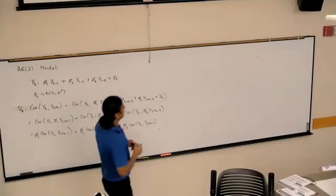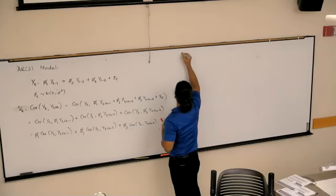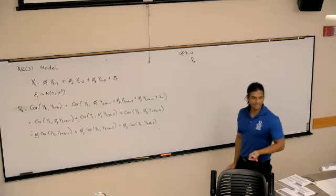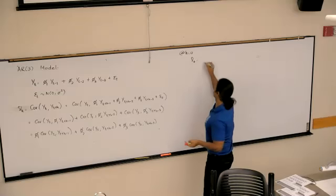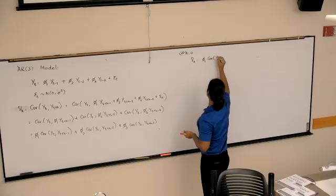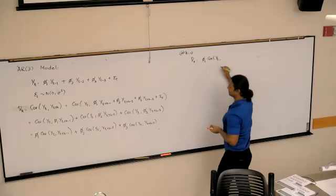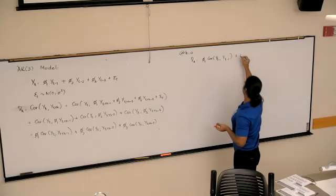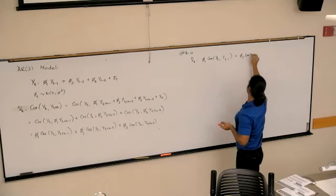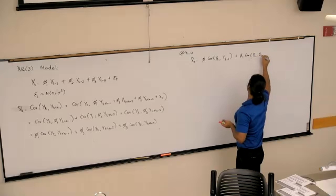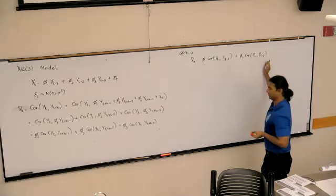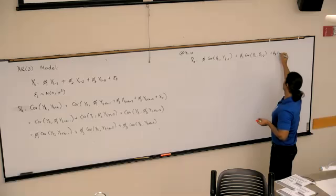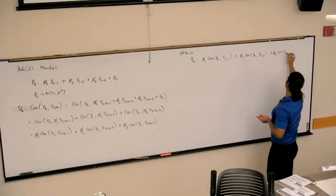So that is our expression for gamma H. Now we can plug in H is equal to zero. We will get gamma zero, which is phi 1, covariance of YT comma YT minus 1, plus phi 2, covariance of YT comma YT minus 2,